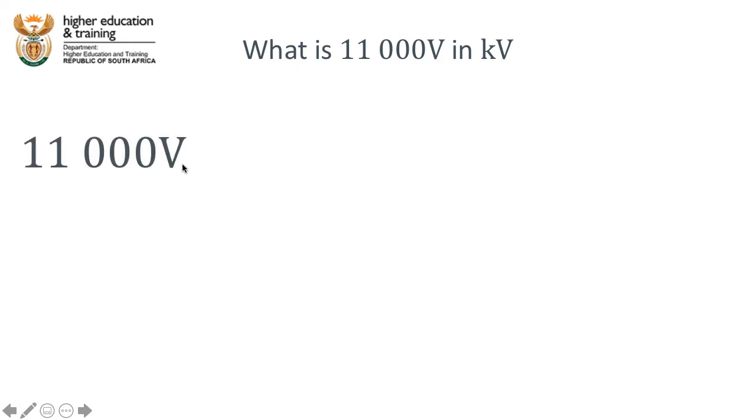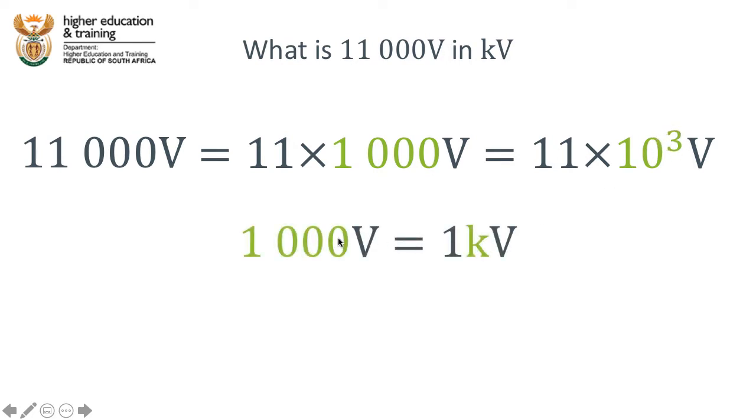Well we know that 11,000 volts, that's the same as 11 times 1,000 volts, which we know is 11 times 10 to the power 3 volts. The 1,000 and the 10 to the power 3, they mean the same thing. 1,000, remember it's just 10 times 10 times 10. 10 times by itself, three times.